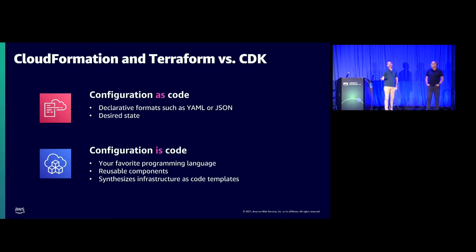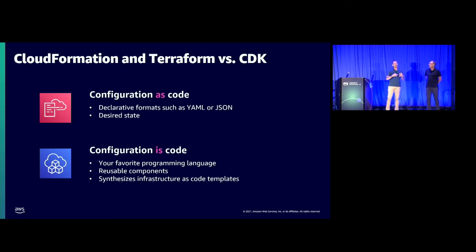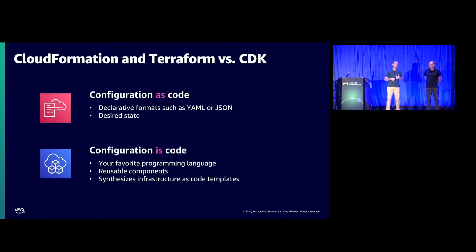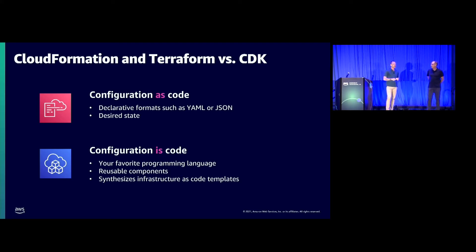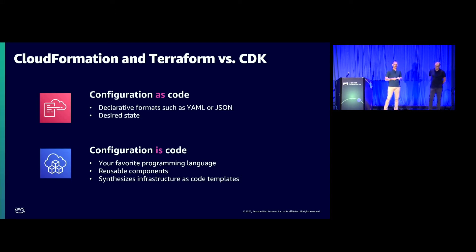A common question is: what's the difference between CloudFormation, Terraform, and CDK? Configuration as code — that's CloudFormation and Terraform — are declarative formats that describe desired state. They work well and allow for automation and portability. But with CDK, it's different: configuration IS code. It's your favorite programming language where you can build reusable components, do looping for constructs, and use abstract classes, inheritance — things that aren't possible in other IAC tooling. You can also use aspects, which allow you to apply operations across your entire construct tree.